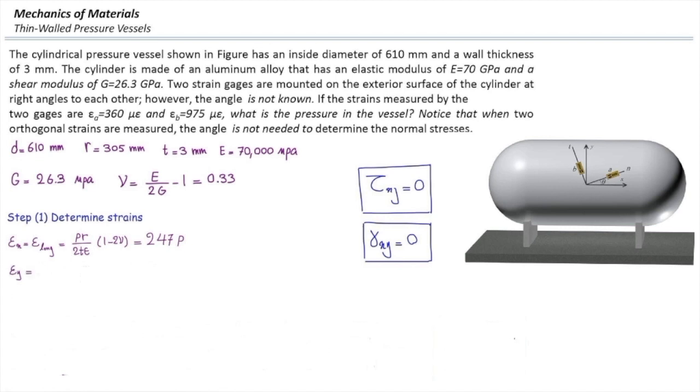Similar to that, we can determine strain in the y direction, which is hoop strain, and that would be 1213p. So, we have determined internal strains in x and y direction.